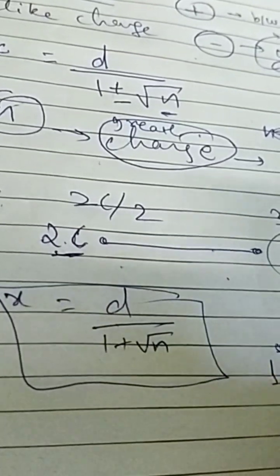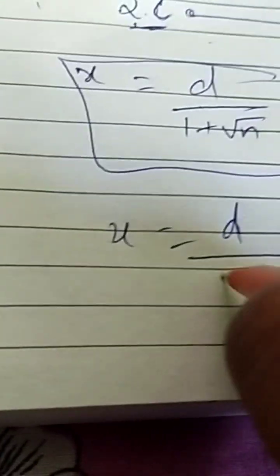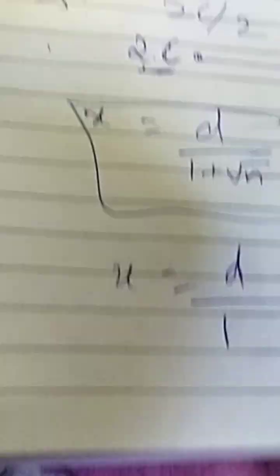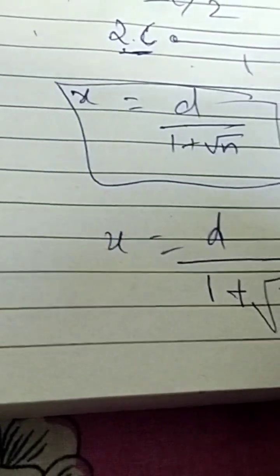So one charge you get 1 coulomb and here you get 3 by 2 coulomb. Here now you calculate the null point. So x will be d by under root, for like charges it is plus so I am giving plus by under root 3 by 2. And suppose d is 1 meter so it will be 1 by 1 plus root 3 by 2. So x is this.